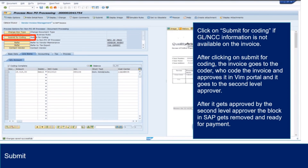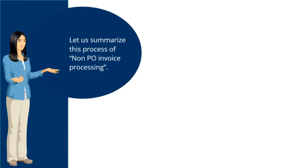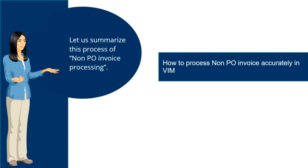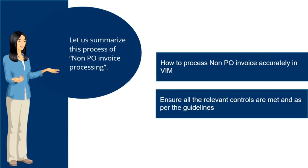After it gets approved by the second level approver, the block in SAP gets removed and it is ready for payment. Now as you have gone through this course on non-PO invoice processing, let us summarize this process. During this course, you got familiar on how to process non-PO invoices accurately in VIM, and also understood all the relevant controls that should be met as per the guidelines.